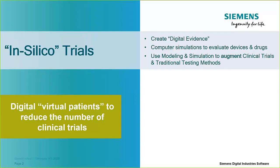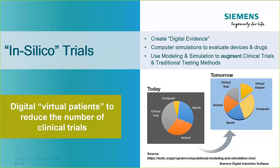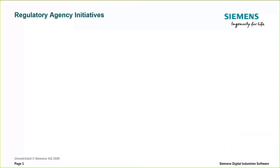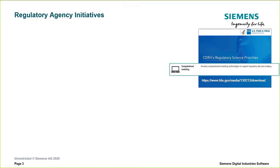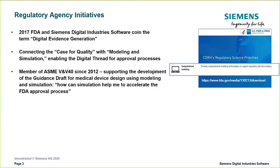The goal, as illustrated in a diagram from the MDIC website, is to change the proportion of testing performed on humans and animals so that more is performed on computers via simulation and on virtual patients — offloading animal and human trials to their digital twins. From a regulatory perspective, the FDA is roundly supportive of using simulation to generate digital evidence of safety and effectiveness, with computational modeling among their regulatory science priorities. The term 'digital evidence generation' was actually coined during a meeting between Siemens and the FDA back in October 2017.